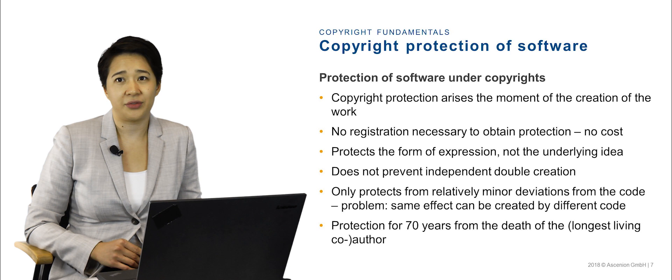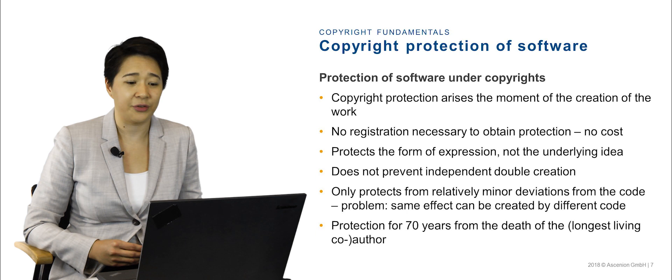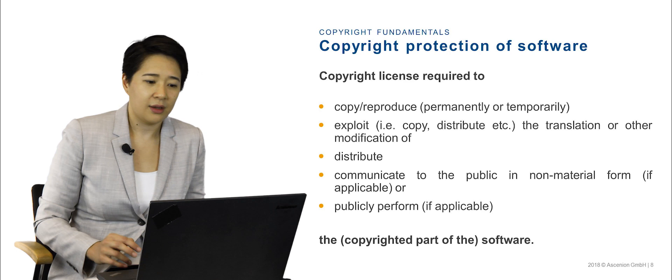This means that copyrights only protect from relatively minor deviations from the code. A problem could arise if the same effect or result can be created by different code — copyrights to your code would not necessarily protect against copyright of a different code. Copyright protection lasts for 70 years from the death of the author.